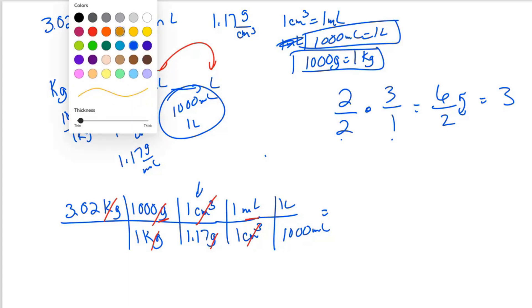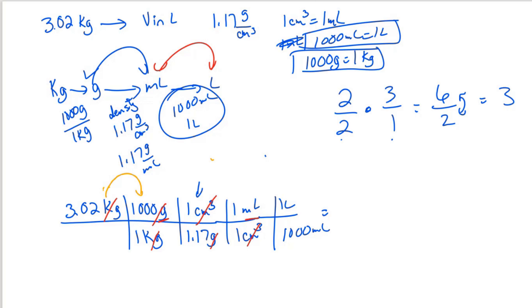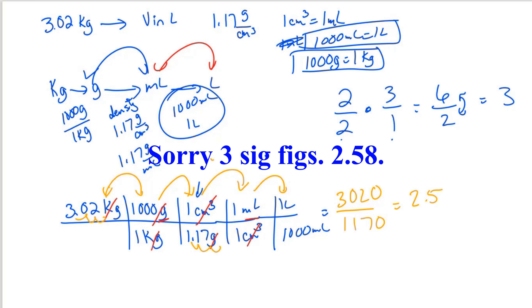So now I just need to multiply. In fact, I'm going to go ahead and demonstrate that. So I'm going to multiply 3.02 times 1,000, and then times 1 times 1 times 1. So we just need to multiply 3.02 times 1,000. Basically I'm just moving the decimal point three places to the right. So I have 3,020. And then on the bottom I've got 1.17 times 1,000. So that's moving the decimal point three places to the right: 1,170. And then I divide 3,020 by 1,170. So that is 2.581.